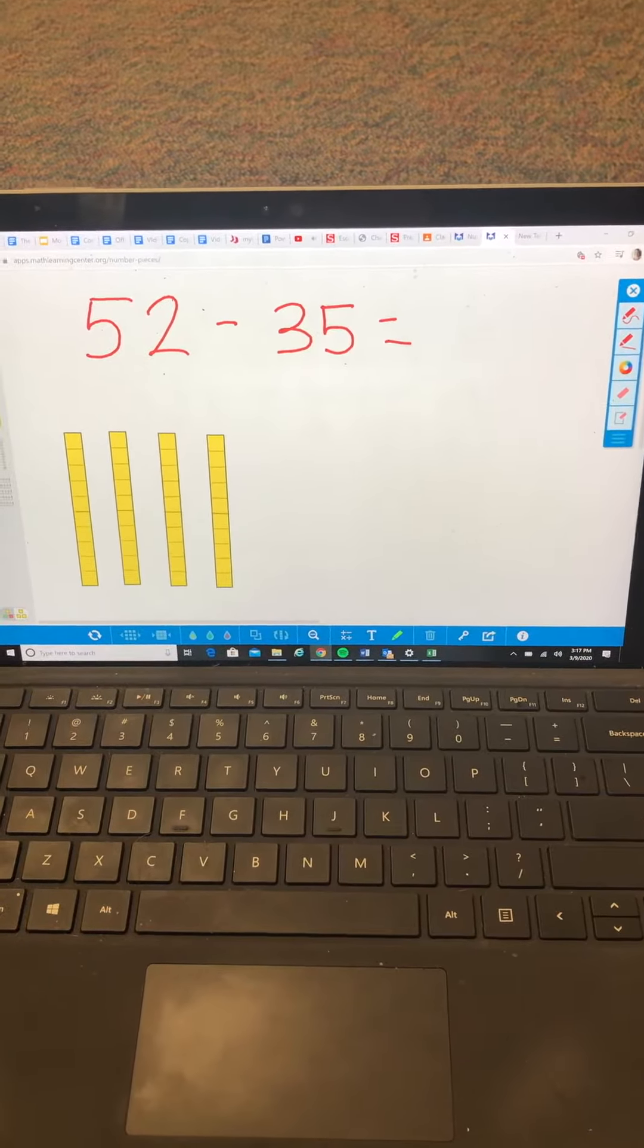So here is a way to help them. This is a computer app that I can send you as well that you can find on the computer. So I wrote 52 minus 35. So so far we have 10, 20, 30, 40, 50, 51, 52.